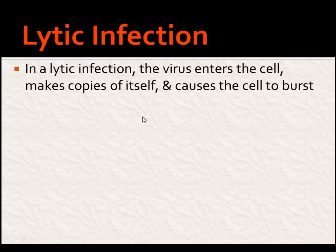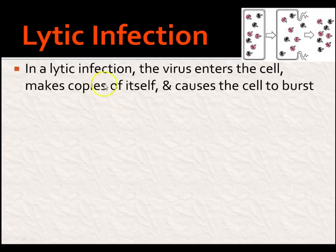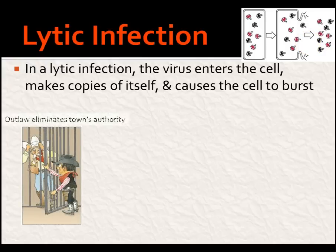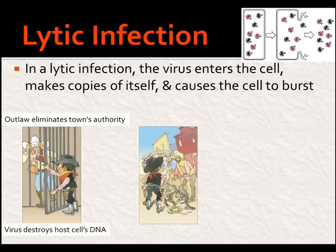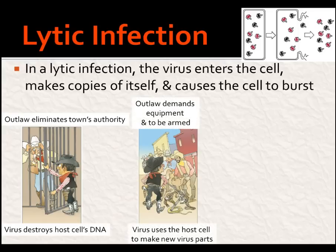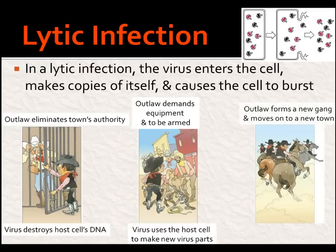We have two types of infection: lytic and lysogenic. In the lytic infection, the virus enters the cell, makes a whole bunch of copies of itself, and causes that cell to burst. Think of it this way: an outlaw comes to town, and the first thing he does is get rid of the sheriff — that's like the virus destroying the host cell's DNA. Next, he demands that the citizens give him arms and equipment — this is how the virus uses the host cell to make new virus parts. Finally, he forms a new gang and moves on to a new town — the host cell bursts, releasing hundreds of virus particles, each going off to infect another cell.